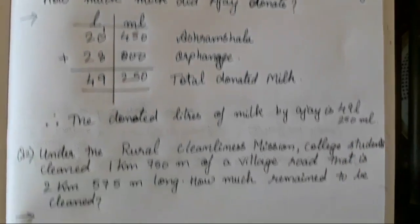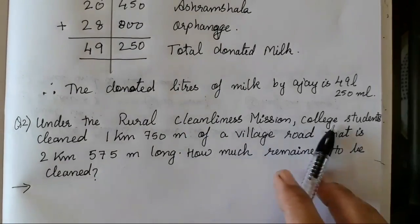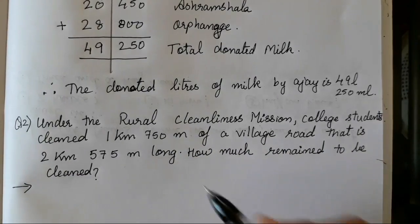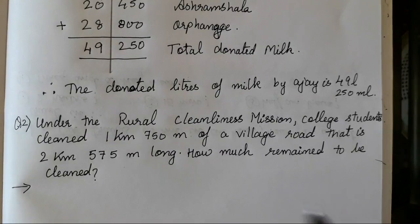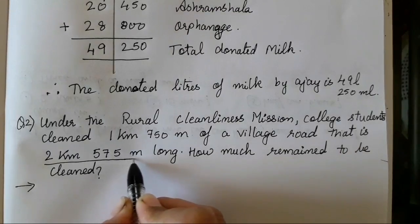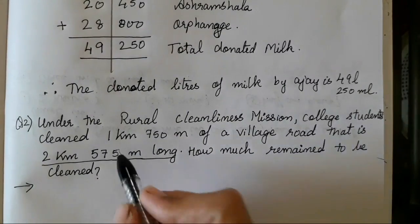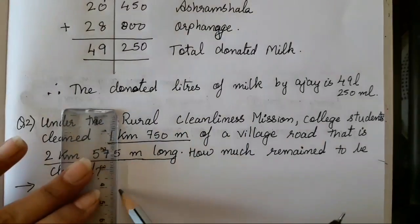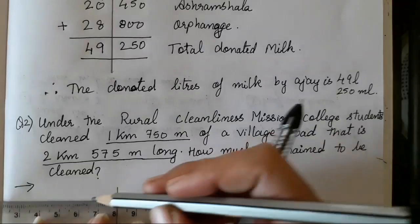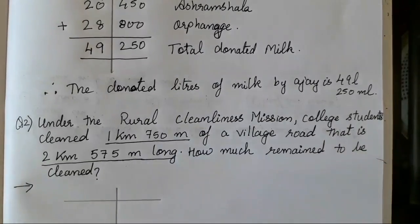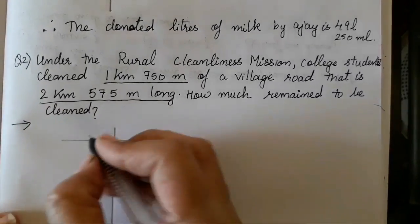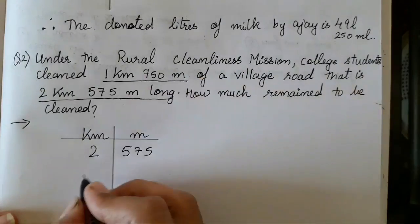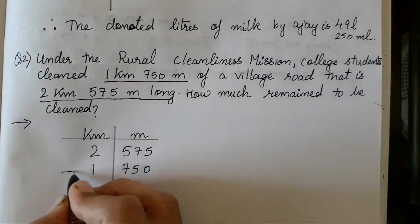Next question: Under the rural cleanliness mission, college students clean 1 kilometre 750 metres of a village road that is 2 kilometres 575 metres long. How much remains to be cleaned? There is a road which is 2 kilometres 575 metres long — this is the length of the road. The students cleaned 1 kilometre 750 metres. We have to find how much length of the road remains to be cleaned, so we have to subtract. Kilometre and metre: 2 km 575 m minus 1 km 750 m.